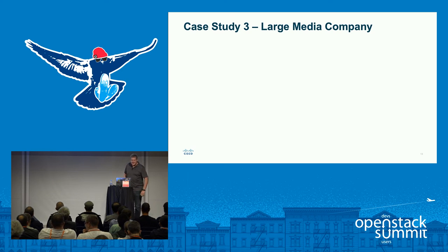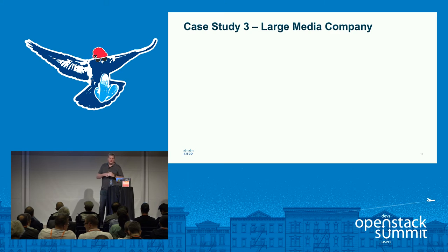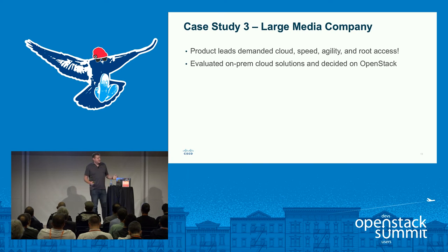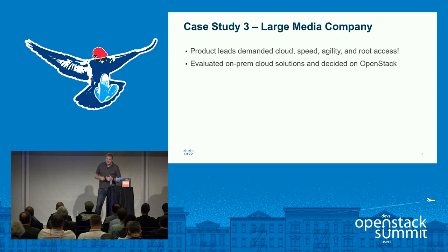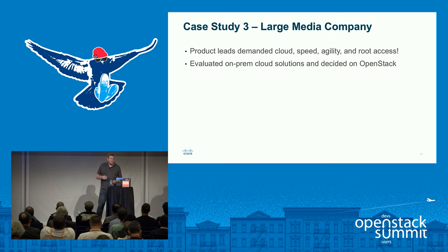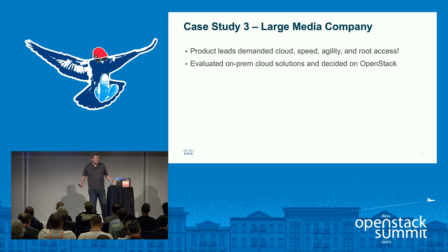The last case study focuses on a very large media company that has had numerous acquisitions over the years. Speaking mostly with a CIO and VP of data centers, what was happening was product leads and DevOps leads from acquired companies were demanding a more agile environment — they wanted more speed and, very importantly, they wanted root access, which typically wasn't provided to end users spinning up virtual machines for development. They evaluated different solutions and settled on OpenStack.